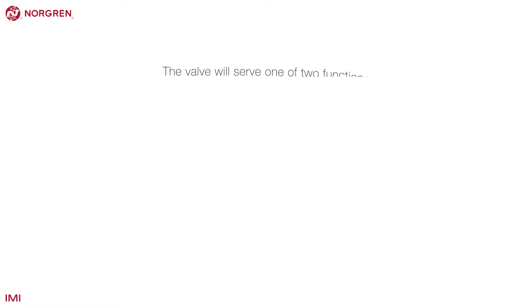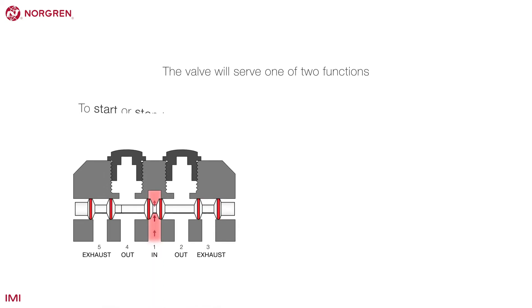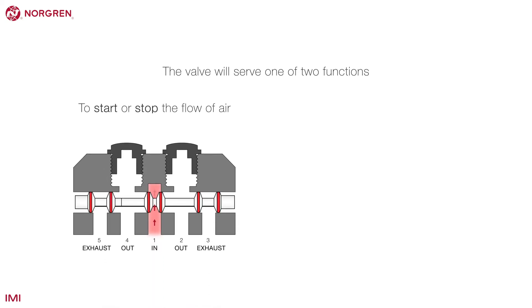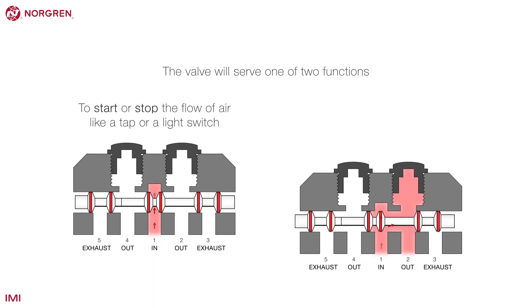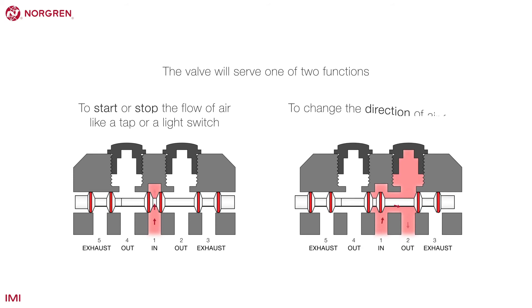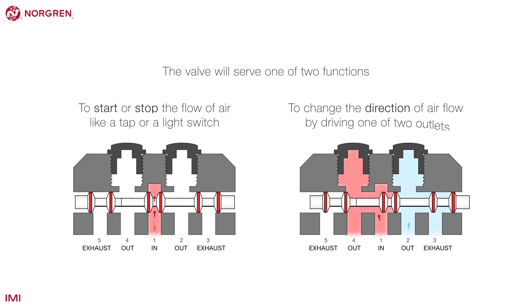In practice, that means the valve will serve one of two functions. The first is to start or stop the flow of air, like a tap or a light switch. The second is to change the direction of airflow by driving one of two outlets.